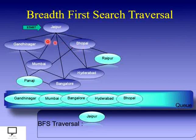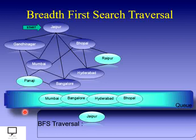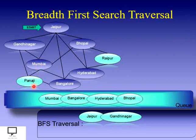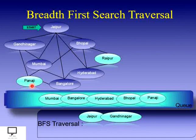We have done with all adjacent vertices inserted into the queue one by one. Now go to step two: delete the node at the front of the queue — delete Gandhinagar and display it. For Gandhinagar, check its adjacent vertices: Mumbai, Panji, and Jaipur. Jaipur and Mumbai are already visited, but Panji is not yet visited. So insert Panji into the queue and mark it as visited.